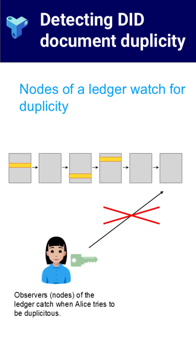One approach is to store the DID document in a public, tamper-resistant location. DID methods like DID Indy and DID IPFS use this strategy. DID Indy, for example, uses a blockchain to preserve a transparent and verifiable history.